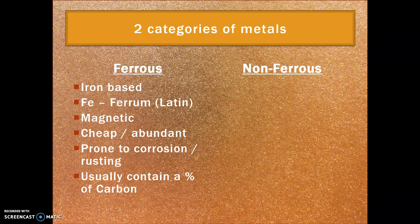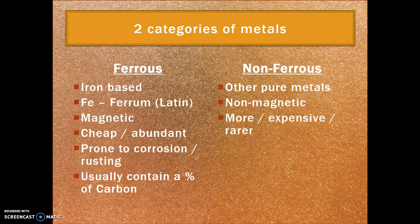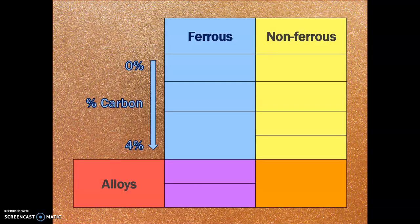Ferrous metals usually contain a percentage of carbon. Non-ferrous metals, comparatively, are pure metals — things like silver and gold. They are typically non-magnetic and tend to be rarer, so they tend to be more expensive, but they have really useful properties — more malleable, with aesthetic properties. I've tabled them to make it easy to understand. We have ten metals to learn today: five ferrous and five non-ferrous.